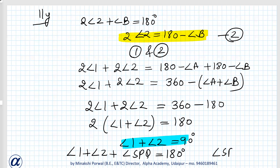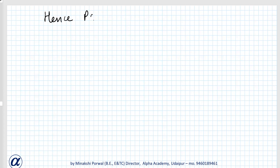This is what we had to prove — that if in a parallelogram one angle is 90 degrees, the figure will be a rectangle. Hence, PQRS is a rectangle.